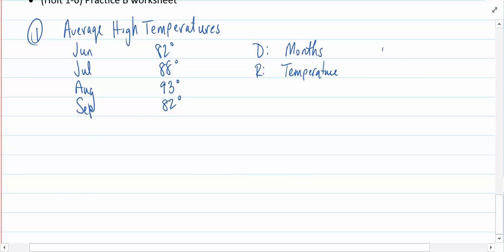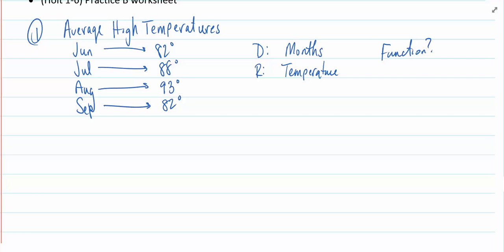Now, is this a function or not? The question you must ask yourself is, does each input have exactly one output? And if it helps, you can draw your arrows so that this looks more like a mapping diagram. And if we look closely here, June points to one object, July points to one object, August and September each point to one object. So if each input has exactly one output, does this represent a function? The answer is yes.